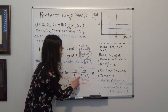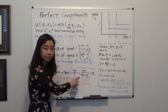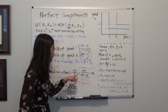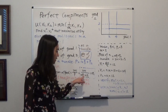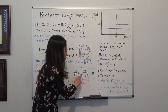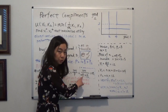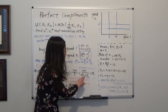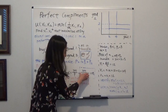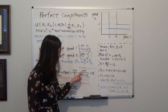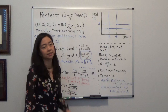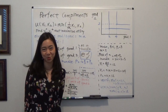The number of bundles I can afford to purchase will be M divided by the price of the bundle, and the price of a bundle is alpha times P1 plus P2. You can imagine it as two spoons of sugar times the price of sugar, plus the price of a cup of coffee. Given that you have a budget M, you can calculate the number of bundles you can purchase.